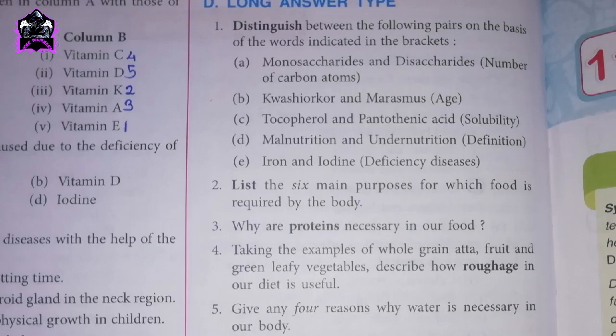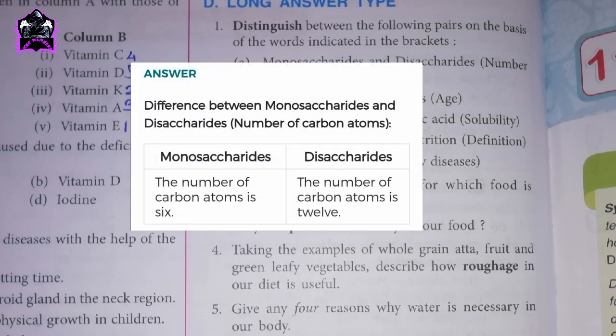Question D, Long Answer Type. 1A. Distinguish between monosaccharides and disaccharides by number of carbon atoms. Monosaccharides: the number of carbon atoms is 6. Disaccharides: the number of carbon atoms is 12.